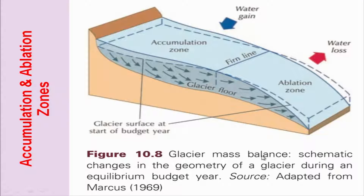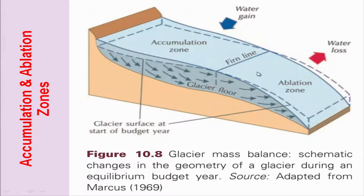What we have is the glacier mass balance, and this will keep changing over the period. You have the zone of accumulation, where you gain the snow — ice accumulation will be there — and below this line, there will be ablation, and this is where you keep losing the snow during hotter phases. If you increase the mass on this side, you reduce the mass on the other side.